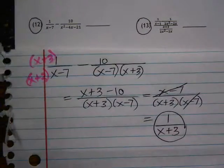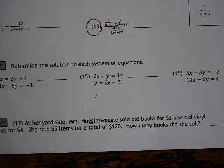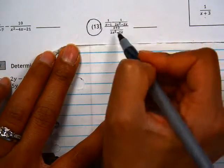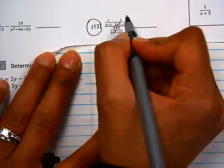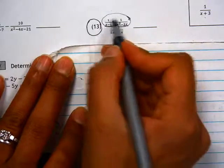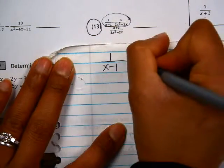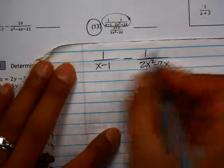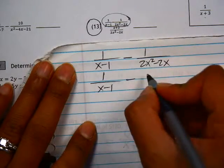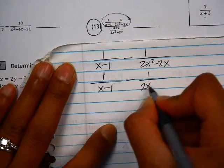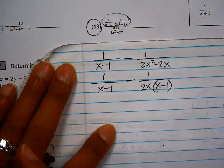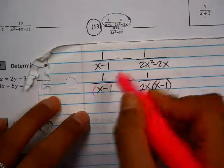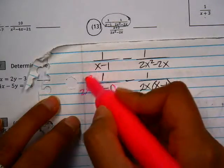Number 13 is a complex fraction, complex because it has one larger fraction with fractions inside. So let's look at one portion of this at a time. Let's look at the numerator, which is this subtraction problem: 1 over x minus 1 minus 1 over 2x squared minus 2x. So when we're subtracting these, we need a common denominator. So I'm going to rewrite this second fraction with a factored denominator: 2x, quantity x minus 1. And then we can see that this fraction is missing a factor of 2x. So this would be multiplied by 2x, and the top would be multiplied by 2x.